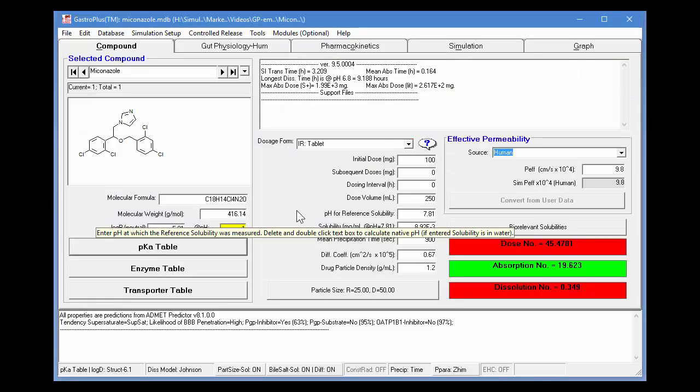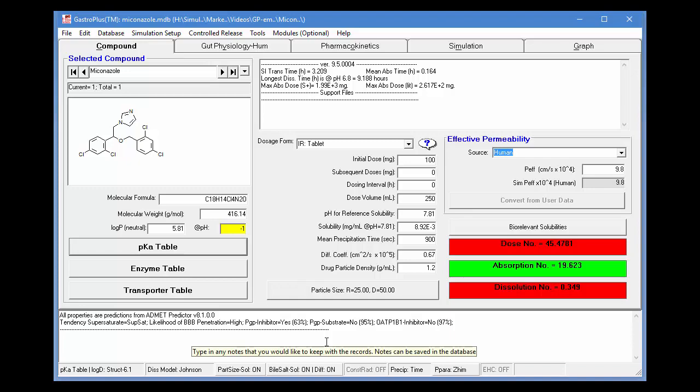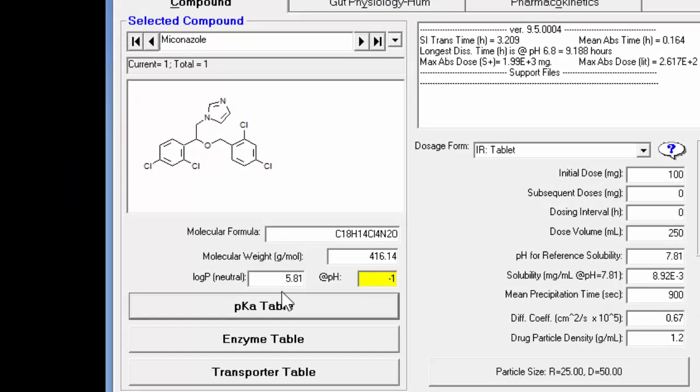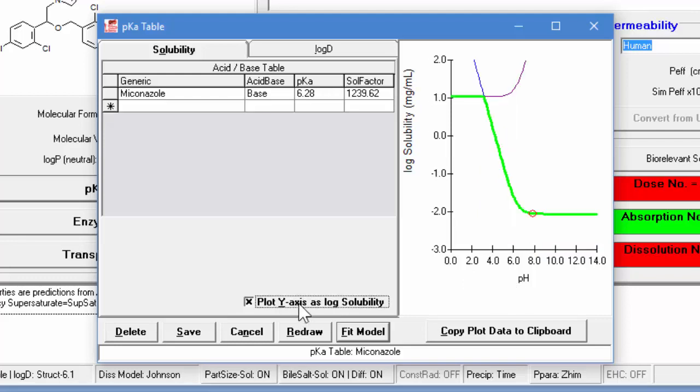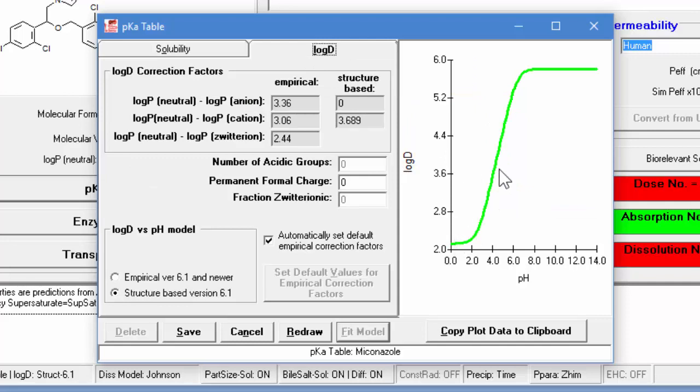I've imported miconazole into a GastroPlus database. The log P is predicted to be 5.81. We can click on the pKa table and you see that the pKa of 6.28 was imported along with the solubility factor. This plot is of the solubility versus pH as I showed in the slides. You can also change this to a log plot and you see here from a little below 4 down to around 6 the solubility decreases as you're increasing the pH. For the log D the value increases as you're increasing the pH.